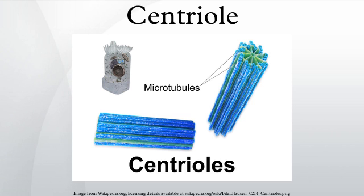Regarding centriole duplication, before DNA replication, cells contain two centrioles. The older of the two centrioles is termed the mother centriole, the other the daughter. During the cell division cycle, a new centriole grows from the side of each mother centriole. After duplication, the two centriole pairs will remain attached to each other orthogonally until mitosis.